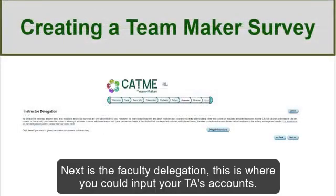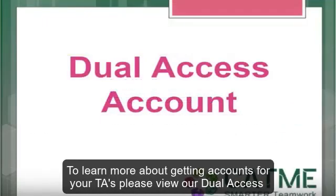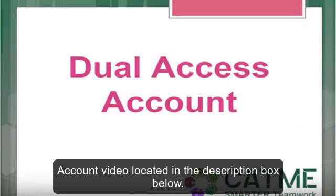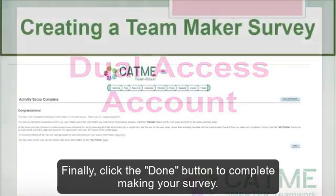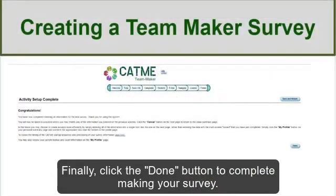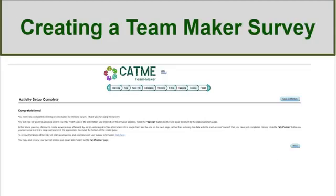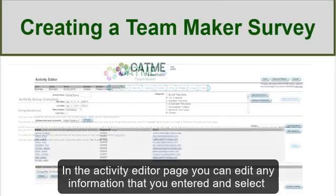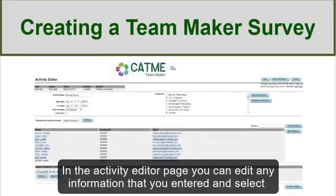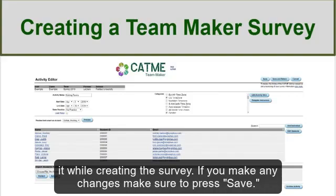Next is the Faculty Delegation page. This is where you can input your TA's accounts. To learn more about getting accounts for your TAs, please view our Dual Access Account video, located in the description box below. Finally, click the Done button to complete making your survey. In the Activity Editor page, you can edit any information that you entered and selected while creating the survey. If you make any changes, make sure to press Save.